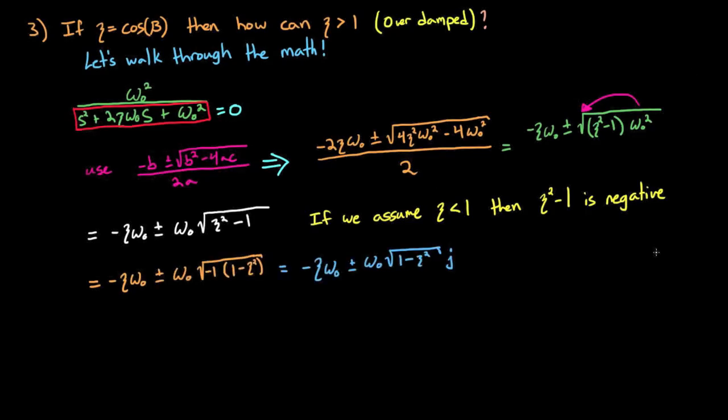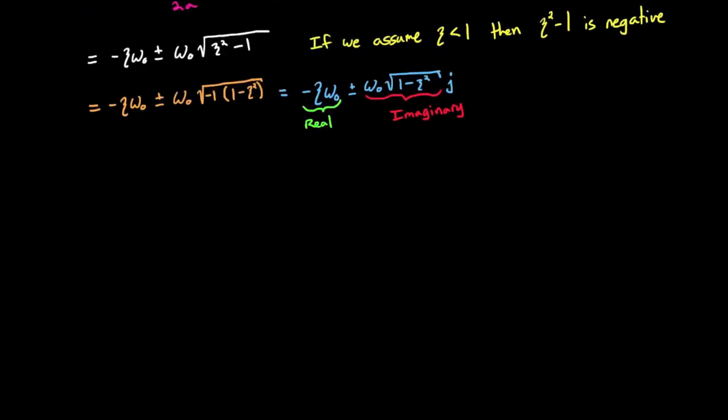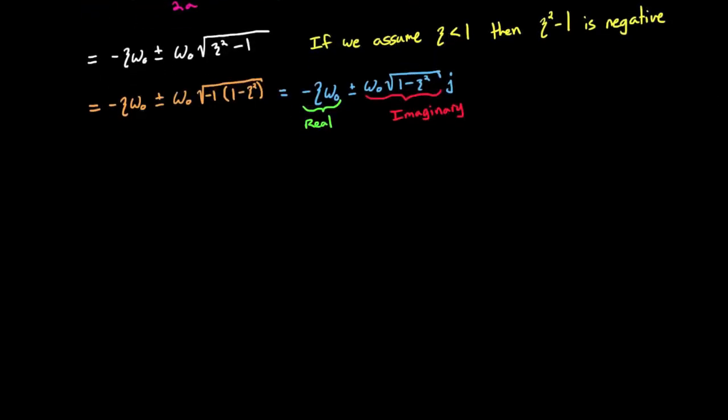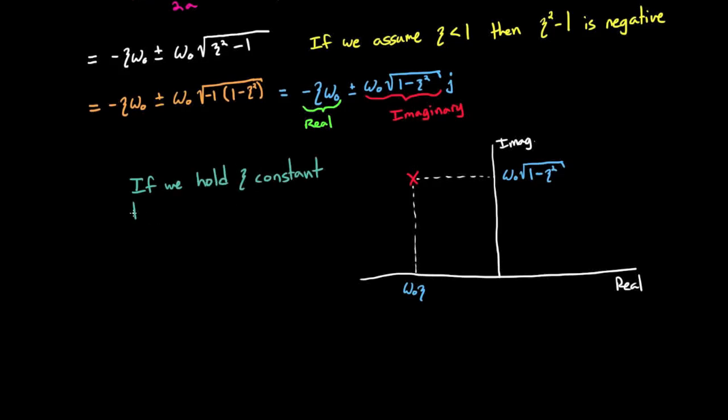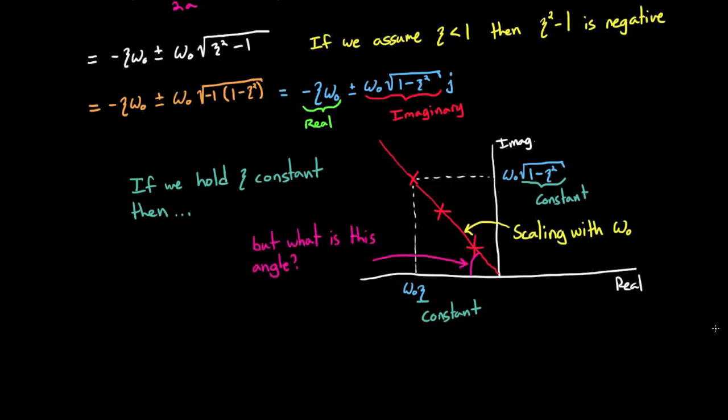There are two roots, and both have the same real component but opposite signs on the imaginary component. If we just plot one of them, we can see that it's at negative ω₀ζ in the real axis and positive ω₀ times the square root of 1 minus ζ squared in the imaginary axis. Now it should be easier to see that if we hold ζ constant, the pole scales with ω₀ along that line that intersects with the origin.